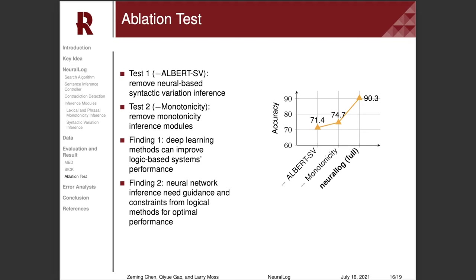Next, we removed the monotonicity inference modules. The accuracy also dropped significantly and is similar to the previous ablation test. We find that inference from neural networks requires guidance and constraints from logical methods to provide optimal performance.